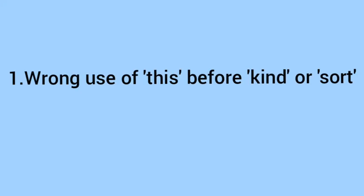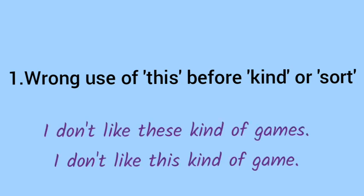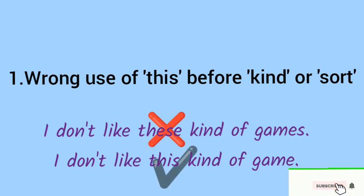Number 1: wrong use of 'this' before 'kind' or 'sort'. 'I don't like these kind of games' is a wrong sentence. 'I don't like this kind of game' is the right sentence. Now I am telling you the reason behind it, because you have to understand the rule.